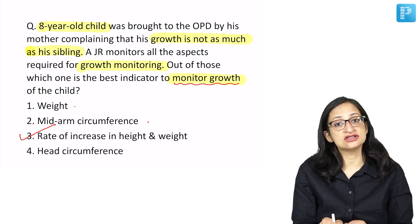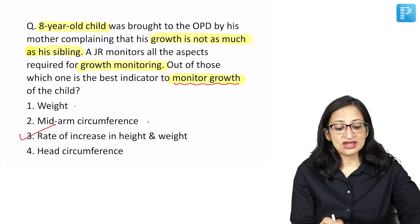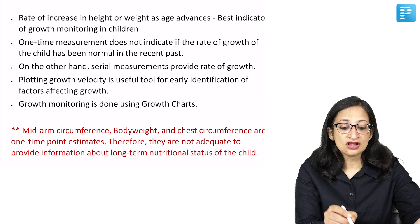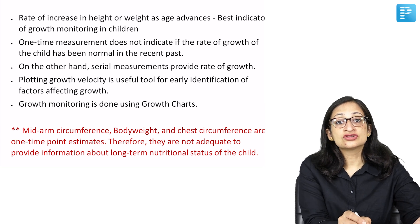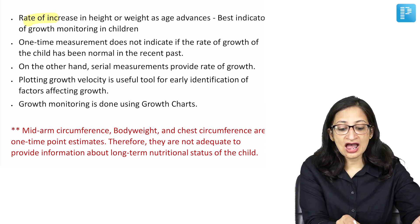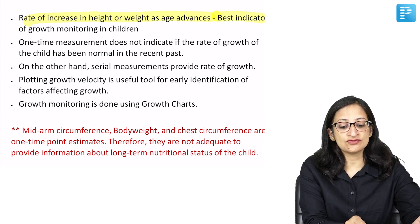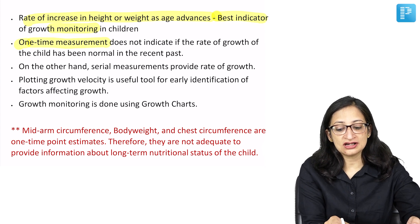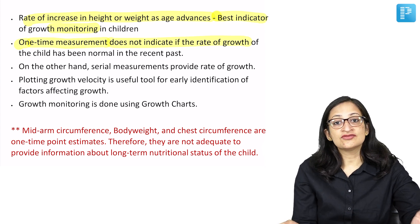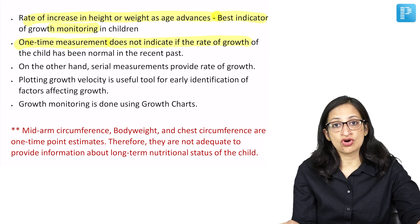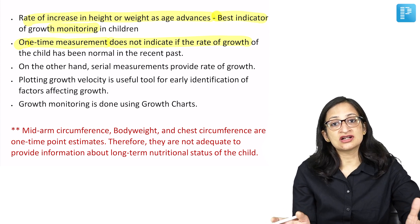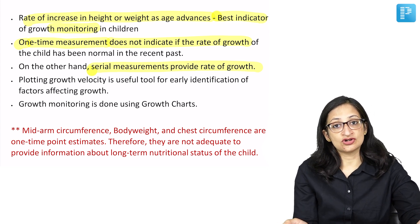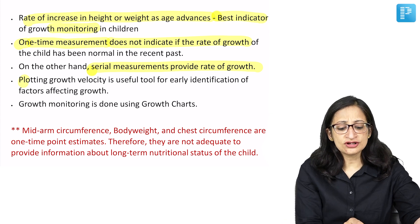At various intervals of three to six months, you need to see the rate of increase in weight and height. The QBank 4.0 explanation confirms: rate of increase in height or weight as age advances is the best indicator for growth monitoring. One-time measurement does not indicate the rate of growth or whether the child has been normal recently. Serial measurements provide the rate of growth.